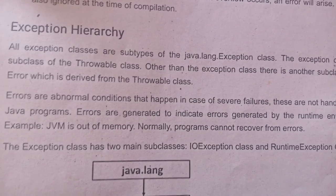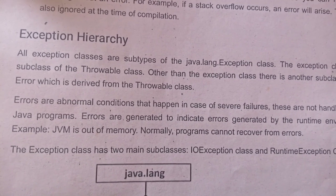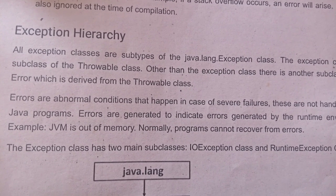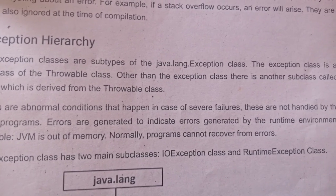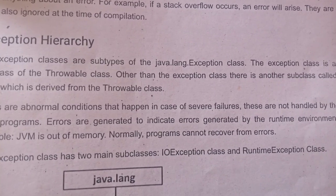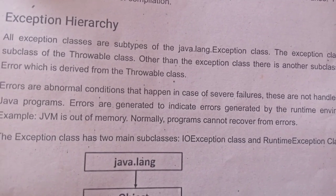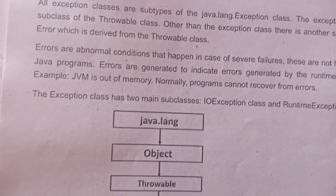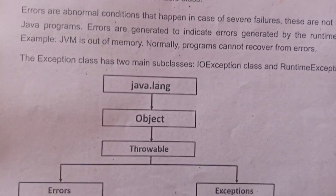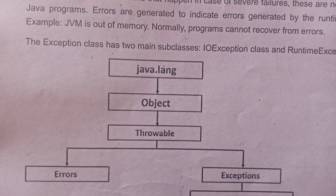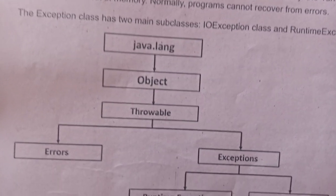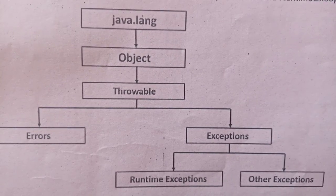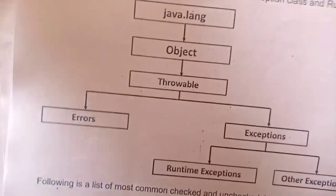The exception class has two main subclasses: IOException class and RuntimeException class. The hierarchy is: java.lang.Object → Throwable → Error and Exception → RuntimeException and other exceptions.